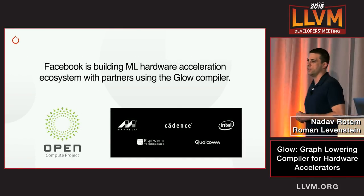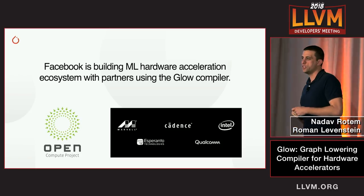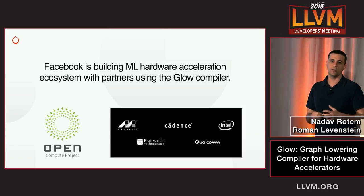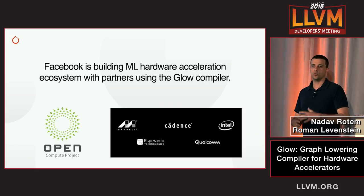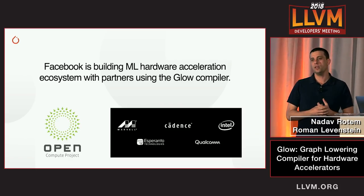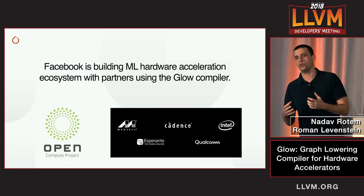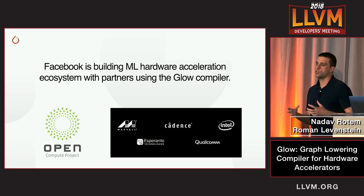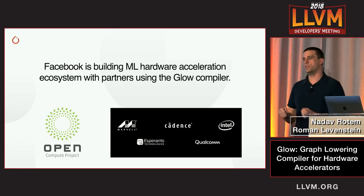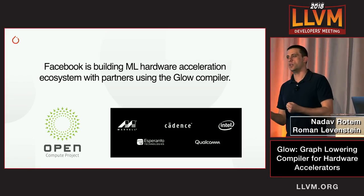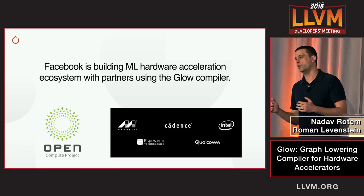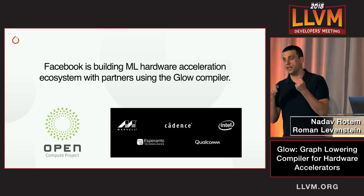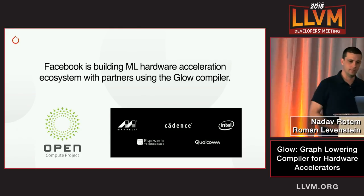Last month, Facebook VP of infrastructure Jason Taylor announced that Facebook will be working with partners on building hardware accelerators, and making them available through the Open Compute initiative. Glow is the project that will drive these accelerators — it is the software stack and compiler to take the PyTorch neural network graph and execute it on the accelerators.